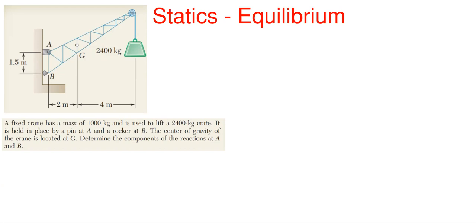What we have here is a fixed crane that has a mass of a thousand kilograms and is used to lift a 2400 kilogram crate. It is held in place by a pin at A and a rocker at B. The center of gravity of the crane is located at G. Determine the components of the reactions at A and B.